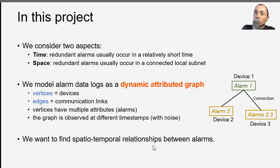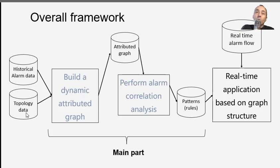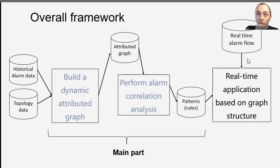Here I show a picture of the overall solution we have designed. On the left we have the alarm data and the topology of the network. We build a dynamic attributed graph from this, and based on this we do the alarm correlation analysis to find patterns or rules that connect the alarms together. Based on these rules we can analyze the real-time alarm flow to remove the redundant alarms.